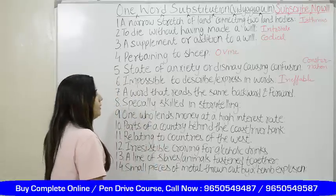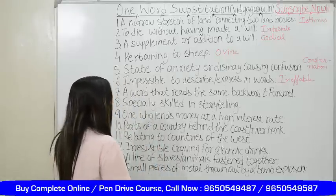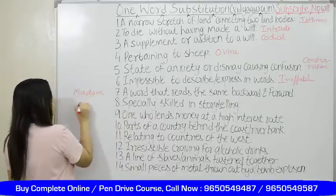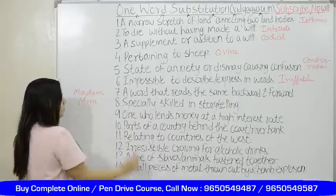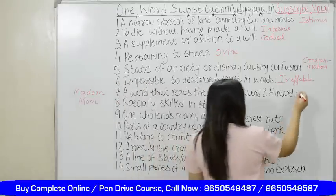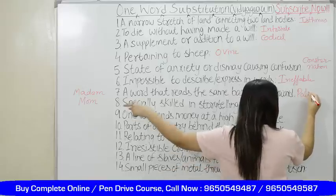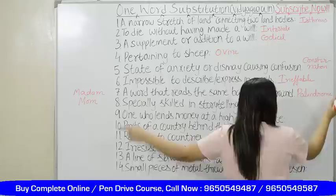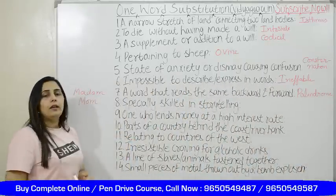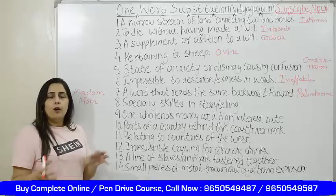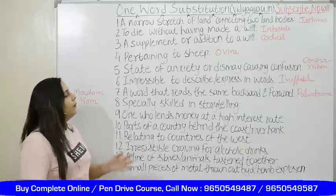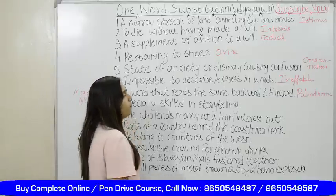A word that reads the same backward and forward — such as certain words. The word for this is palindrome. Such words are called palindromes. When you read them this way or that way, they will be read in the same manner. For example: mom, madam — they are read in the same manner, they are absolutely the same. These words are known as palindromes.